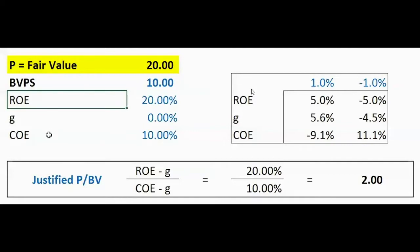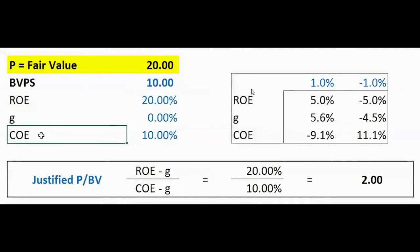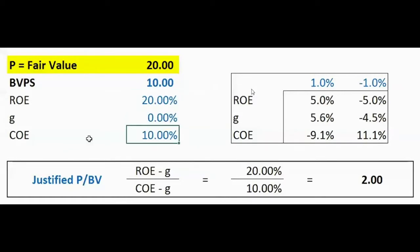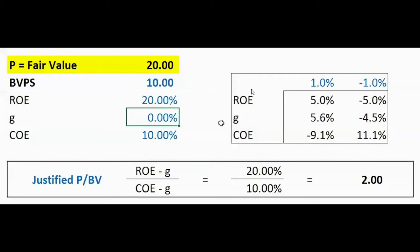So you're paying twice the book value per share to fairly value this bank, given it has zero growth. If the stock generates a return of 20% and your required return — the cost of equity — is 10%, you're willing to pay twice book value because the bank is making double your required rate of return.